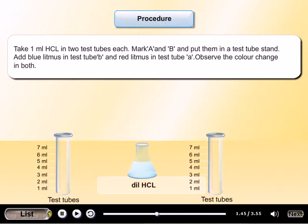Procedure. Point number 1: Take 1 ml diluted HCl in two test tubes each. Mark them A and B and put them in a test tube stand.